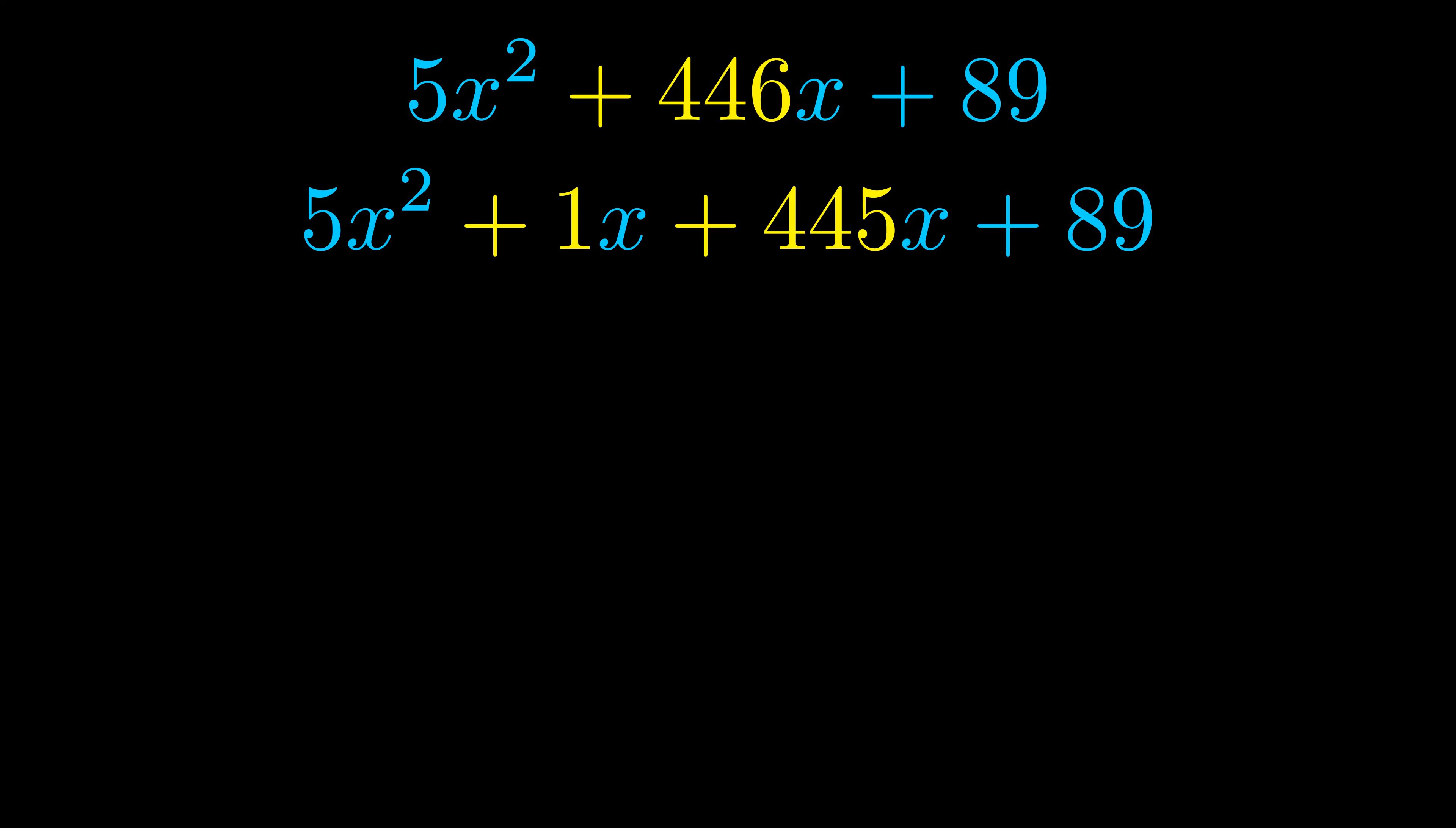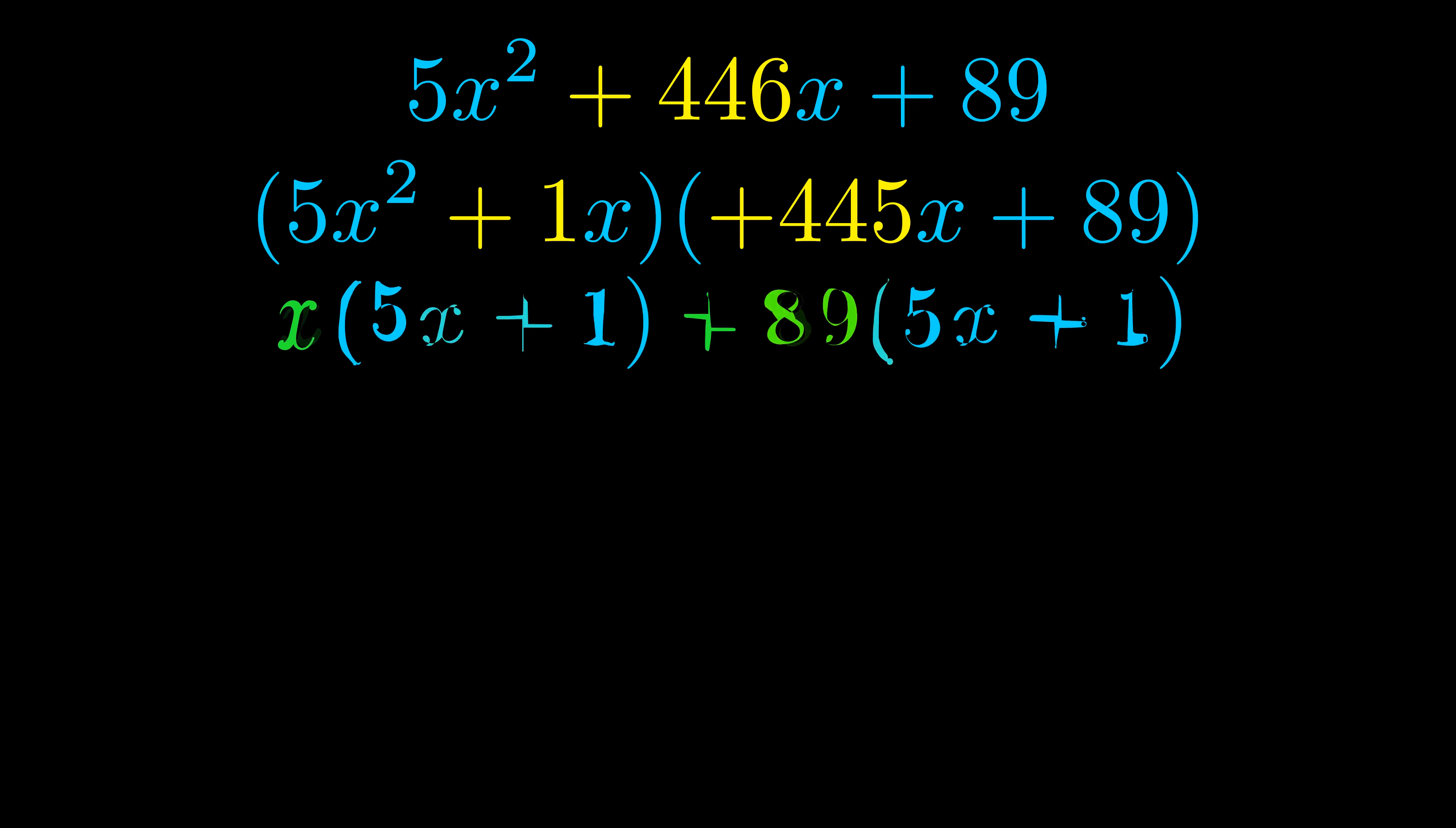Once we've done this we go ahead and we put parentheses around the first term and the last term. And we do that so that we can take the greatest common factor out of both terms. We can see the greatest common factor is now outside in green.